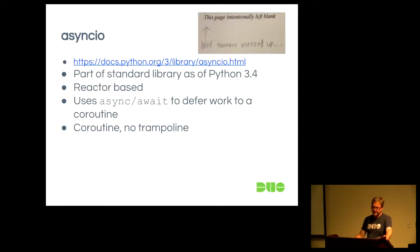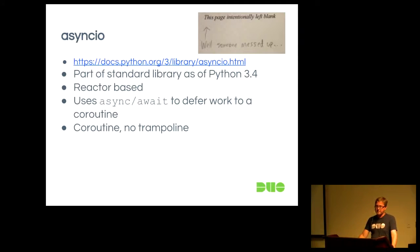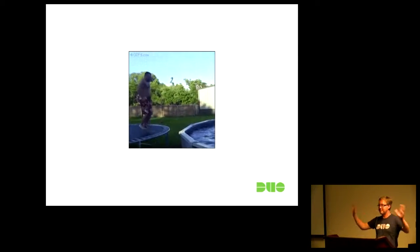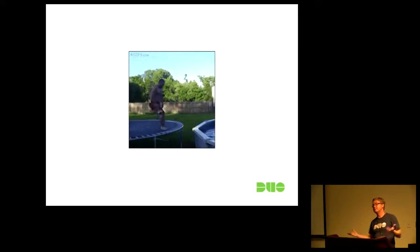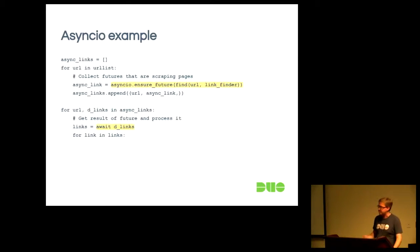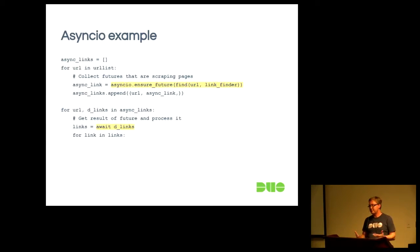AsyncIO couldn't find a nice logo for, but it's part of the standard library as of Python 3.4. The async/await syntax was introduced in Python 3.5, which you saw at the keynote. It's also reactor-based like Twisted, but coroutines are now built into the language, so we don't need the trampoline concept. The interpreter gives much better feedback when you use a coroutine incorrectly — no more forgetting defer.inlineCallbacks or forgetting to yield your deferred. The AsyncIO example collects future values using ensure_future, awaits them, gets the links, et cetera. There's a common pattern through all these libraries; it's just the technology underneath that makes them different.